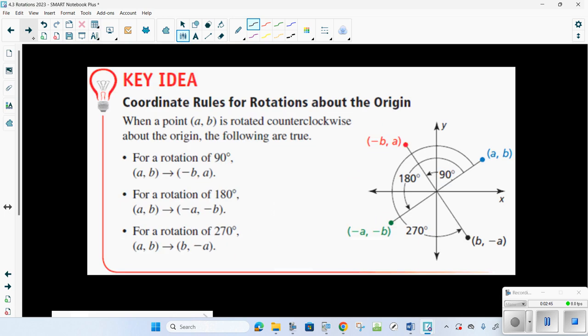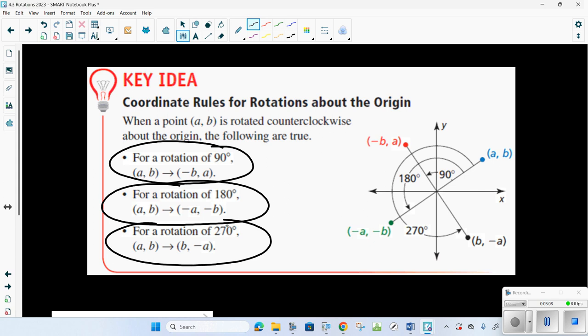Here are the rules that will be given to you on your quiz and on your test. If I'm going to do a rotation 90 degrees, notice the point A, B turns into negative B, A. A rotation 180 becomes negative A, negative B, and a rotation of 270, we are going counterclockwise, so A, B would turn into B, negative A. This page, take a picture of it. That one's going to be given to you.